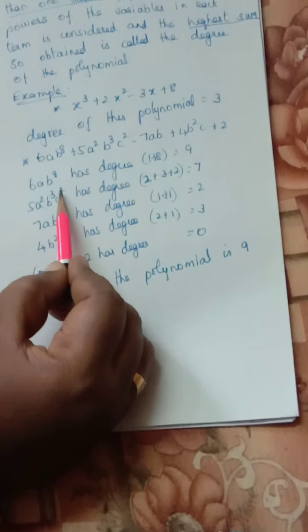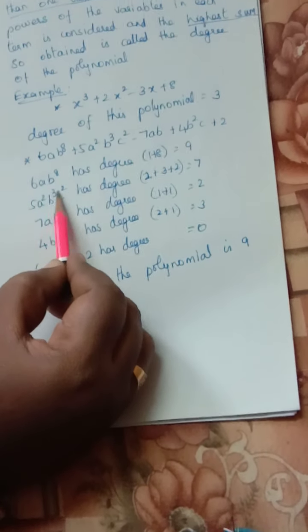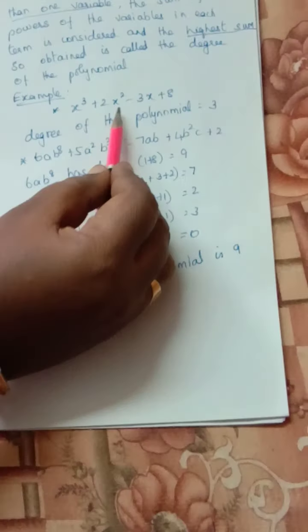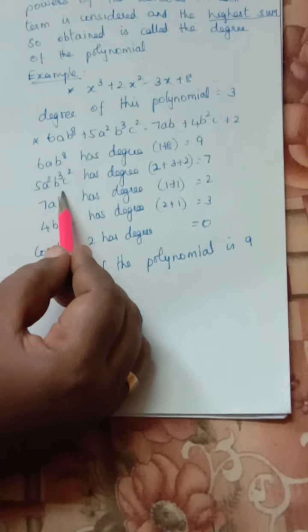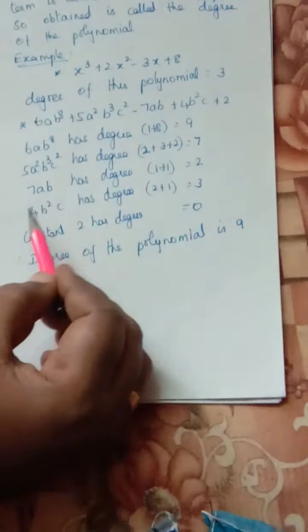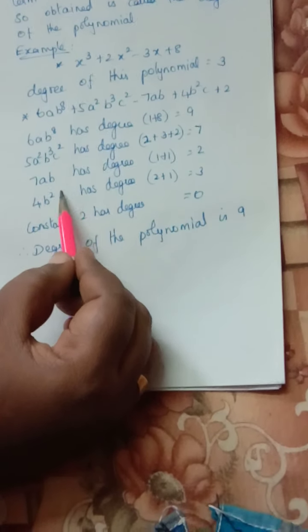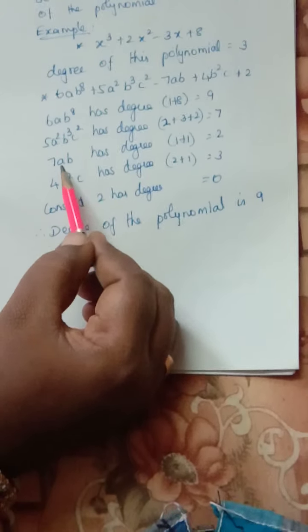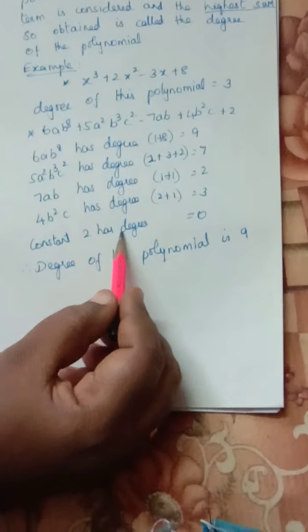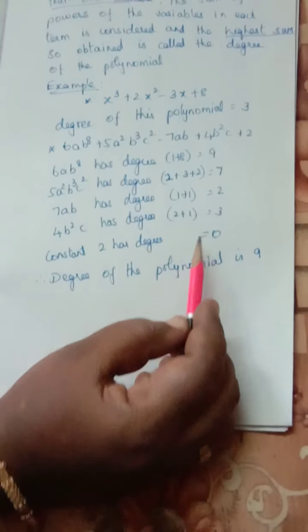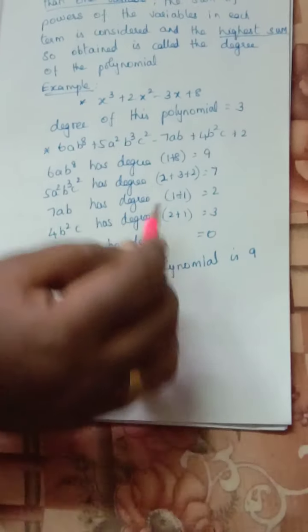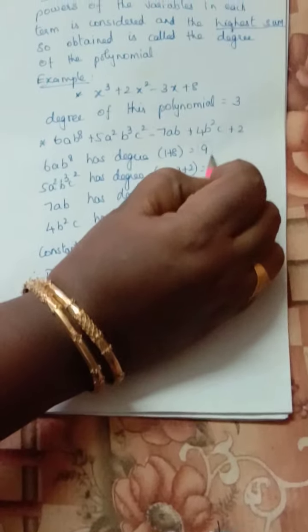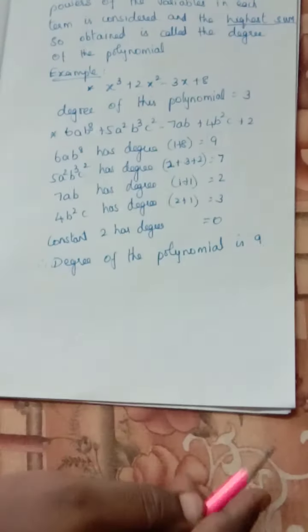Second term 5a²b³c²: powers are 2 plus 3 plus 2 equals 7. Third term 7ab: 1 plus 1 equals 2. Fourth term b²c: 2 plus 1 equals 3. Constant 2 has power 0. So the degrees of the terms are 9, 7, 2, 3, and 0. The highest value is 9, so the degree of this polynomial is 9. You must know how to find the degree whether it has one variable or more than one variable.